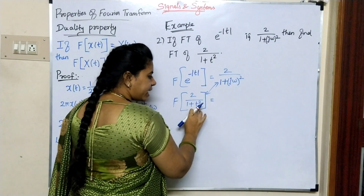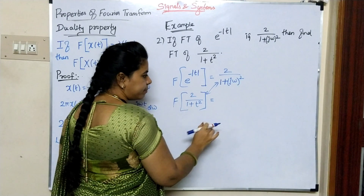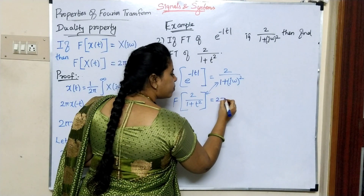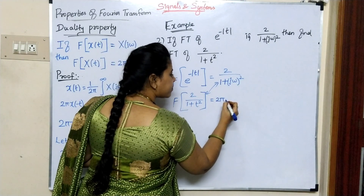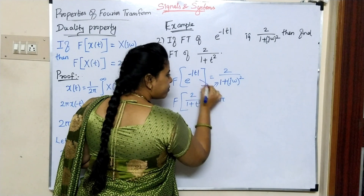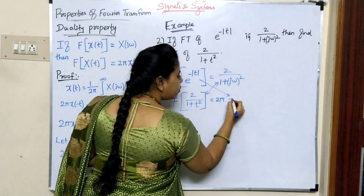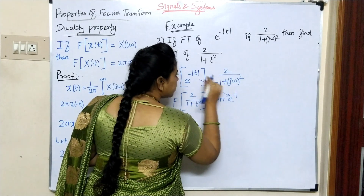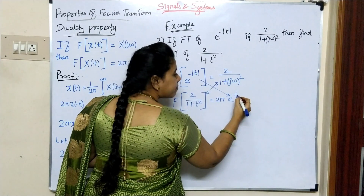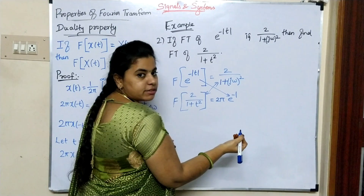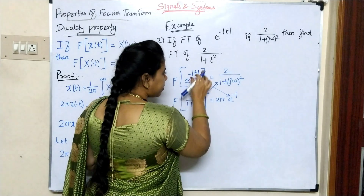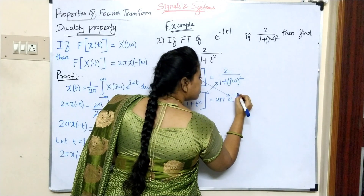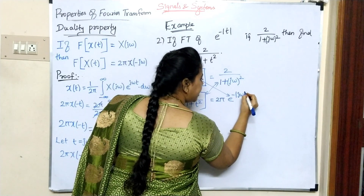Instead of j omega, we have t. So here we apply duality: multiply by 2pi, and replace t with minus j omega, giving modulus of j omega. Using the duality property, the Fourier transform of 2 divided by 1 plus t squared equals 2pi into e to the power minus modulus of j omega.